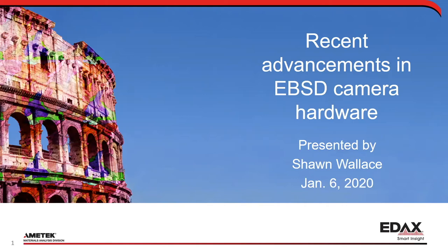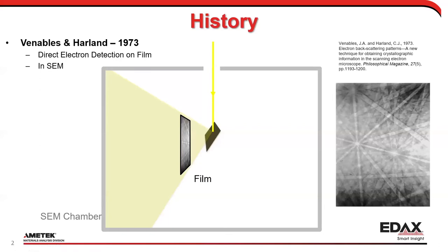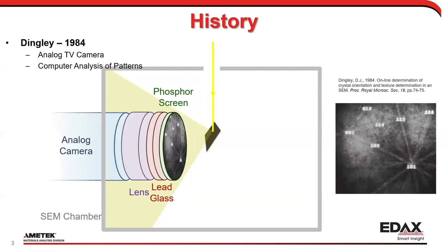Let's talk about hardware. The history of EBSD goes back to the 1970s, when EBSD was done using X-ray sensitive film. You'd take film, get a pattern on it, and then go into the dark room to process it. The electron beam would come down, interact with your sample, hit the film — not very fast.